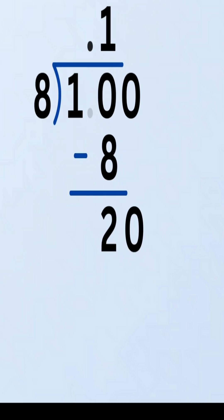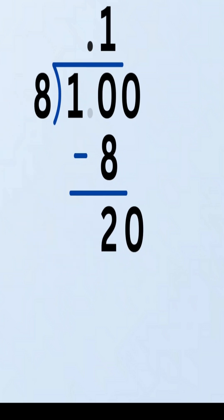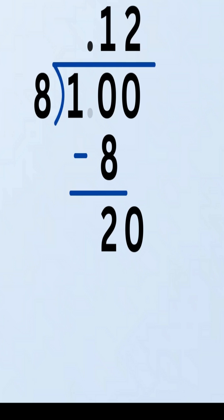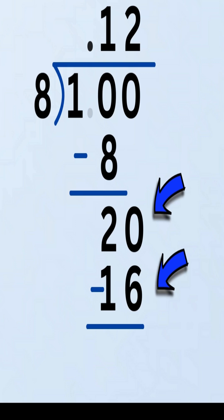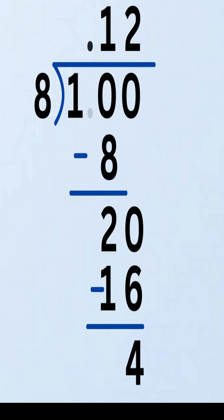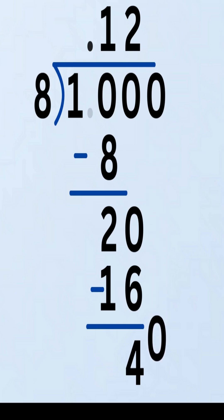Now ask again: how many times does 8 go into 20? The answer is 2 times. Write 2 in the quotient. Multiply: 8 times 2 equals 16. Subtract: 20 minus 16 equals 4. Still a remainder of 4 — keep going. Bring down another 0 from the dividend, place it next to the 4, making 40.